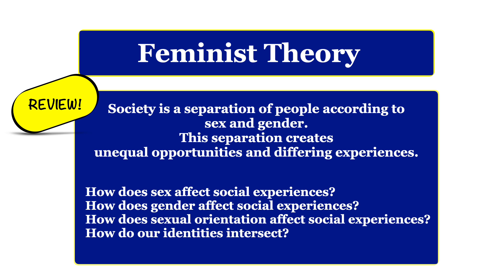As a review, feminists see society as a separation of people according to their sex and gender identities, as well as their sexual orientation. They argue that this separation creates unequal opportunities and differing experiences for people based on whether they identify as male, female, feminine, masculine, trans, etc. The questions we want to look at when using this theory are: how does a person's sex affect their social experiences? How does a person's gender affect their social experiences? How does a person's sexual orientation affect those social experiences? And lastly, how do our identities intersect? For example, how does a feminine female experience society versus a masculine female? Or how does a gay masculine male experience society versus a feminine gay male? Those are the kinds of issues and questions that the feminist theory is trying to understand and explain.